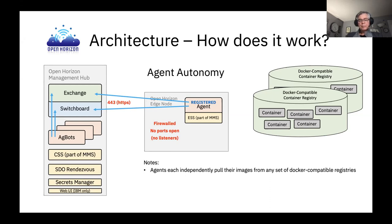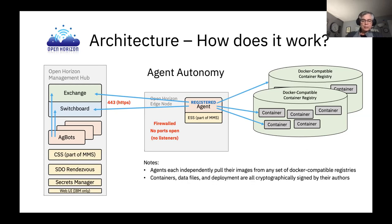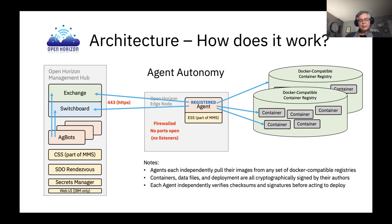The agents each independently pull their container images from your Docker-compatible registries, along with data files and deployment details — things like what ports your container is allowed to bind to, what volumes it's allowed to bind, whether it runs with various capabilities or privileges, and whether it can access particular devices. Containers, files, and deployment information are all cryptographically signed by the authors. Each agent independently verifies the checksums and cryptographic signatures of the containers and their deployment information before deploying any container.